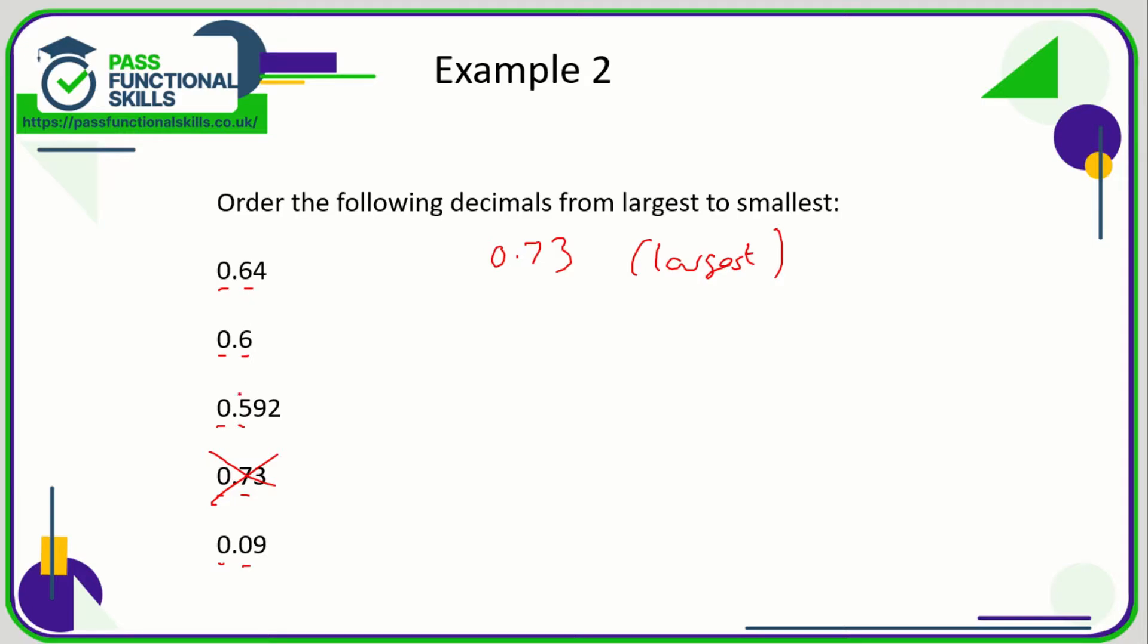Well, 6 is bigger than 5, and 6 is bigger than 0, so one of these two numbers is going to be the next largest. Now this is where some people might struggle, because here we've got a number which has two decimal places and we're comparing it to a number which has one decimal place.